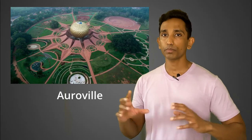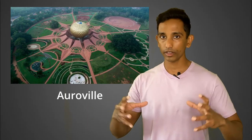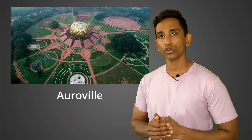Puducherry also has the Mother — Mirra Alfassa, also known as the Mother by her followers — who was the follower and successor of Sri Aurobindo Ghosh. She founded an experimental city called Auroville, which is just outside the district of Puducherry. The idea of the city was that it's a city with no boundaries where people from all over the world with different nationalities and different belief systems can come and live here peacefully.